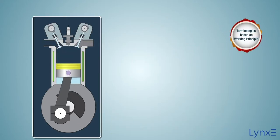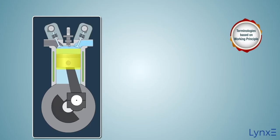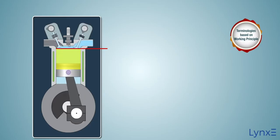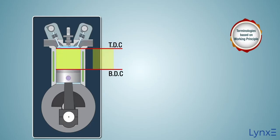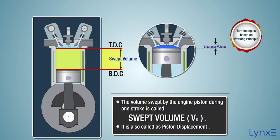The volume swept through by the piston between top dead center and bottom dead center is called swept volume, also known as piston displacement. The total volume is equal to the sum of swept volume and clearance volume.